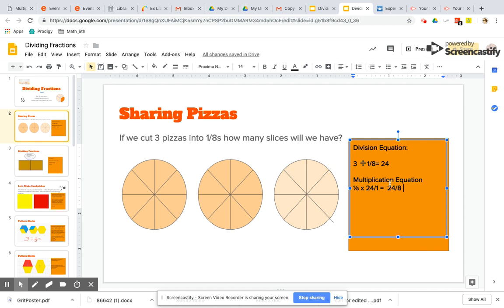That doesn't look like my dividend, which was three. But I also know that 24 over eight is, you got it, an improper fraction. So we can easily change this improper fraction into a whole number because eight can fit into 24 three times. So 24 over eight equals three. Awesome.